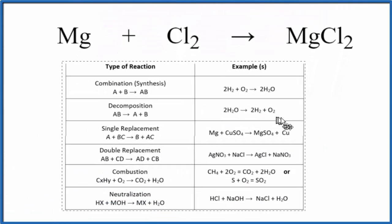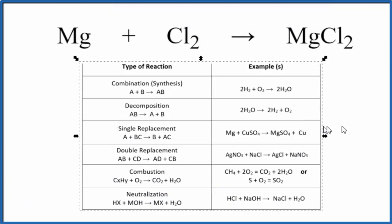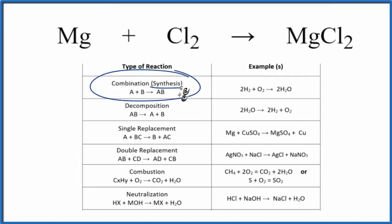If we look at this table of common types of chemical reactions, here is combination or synthesis reaction. It follows the general format of A + B yields AB.